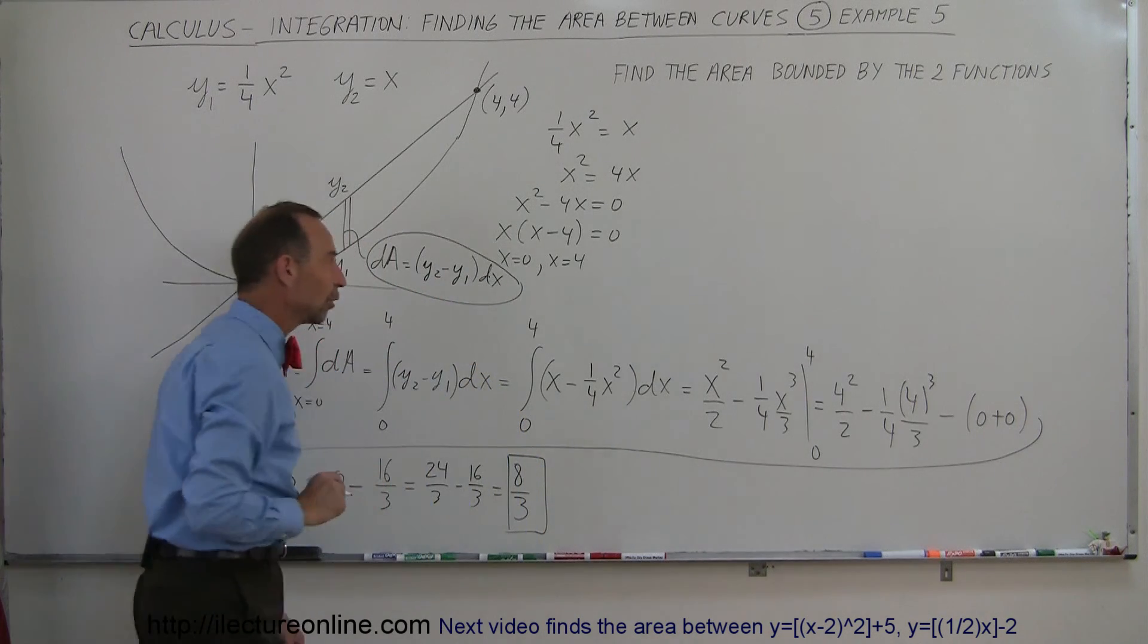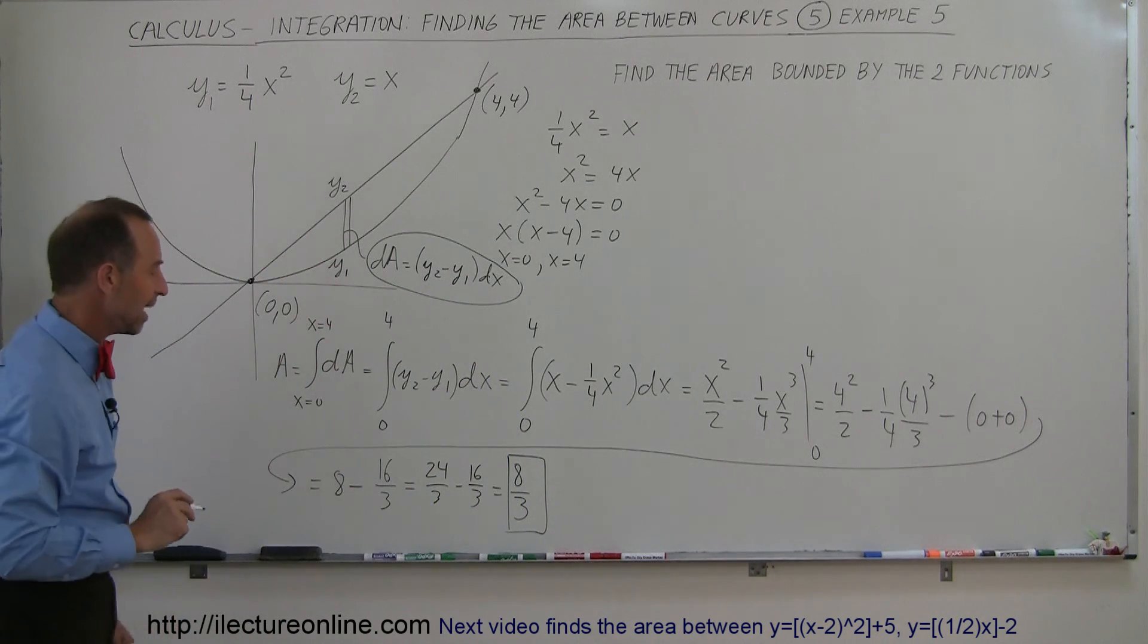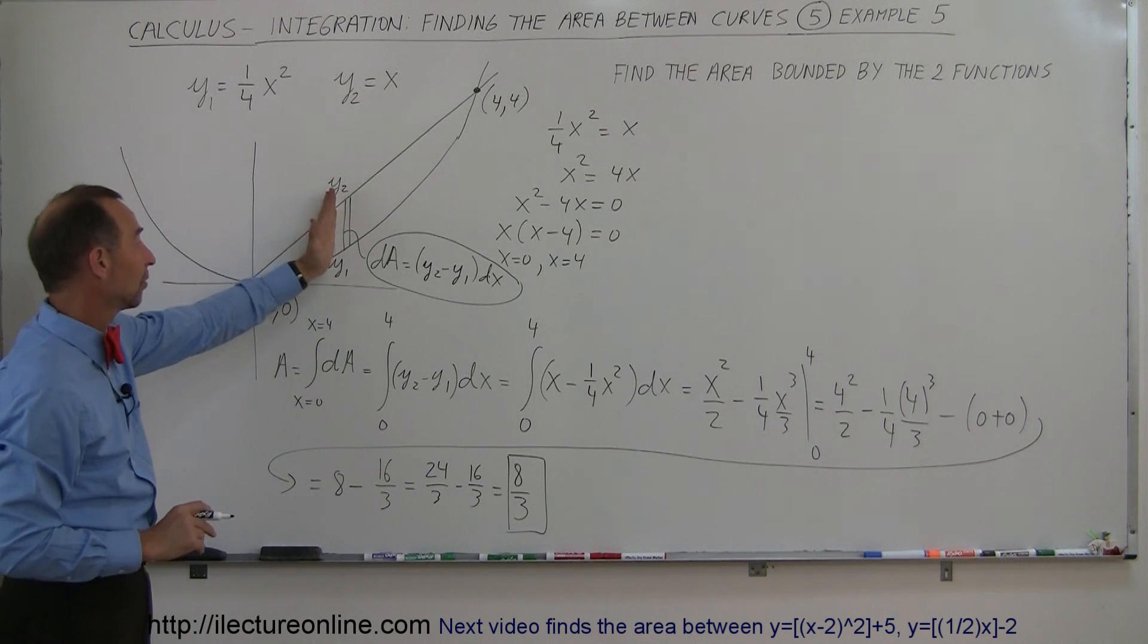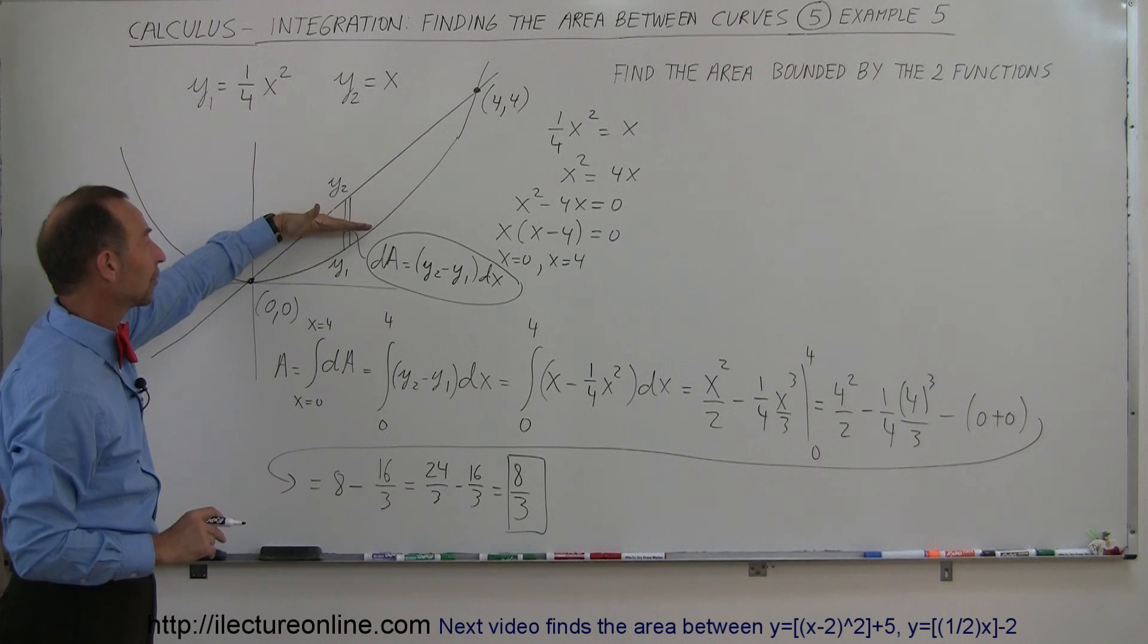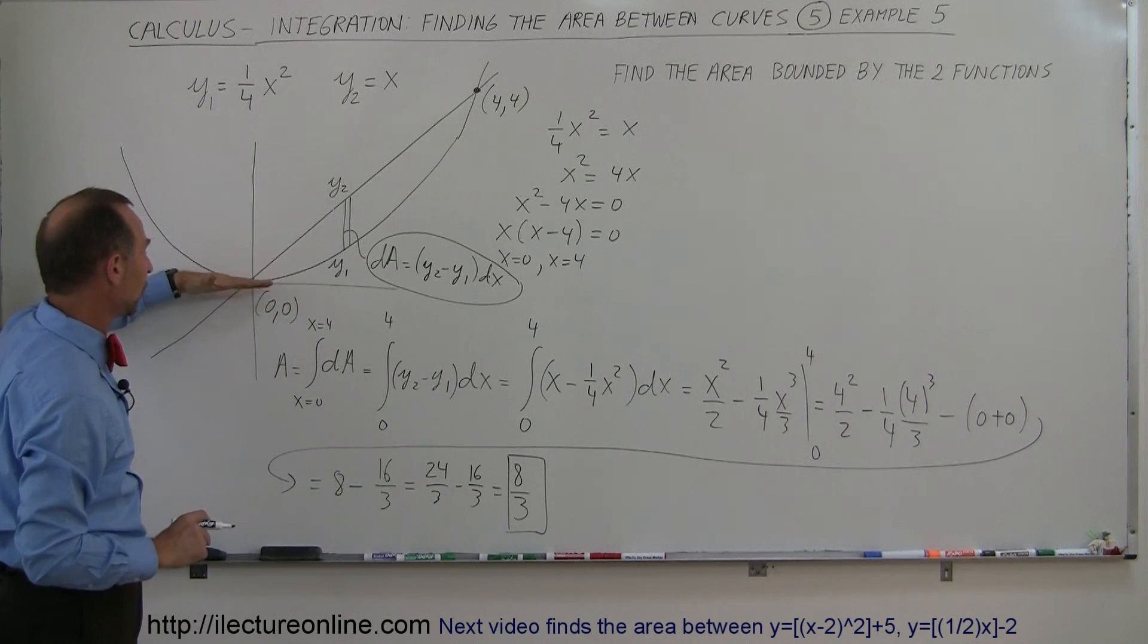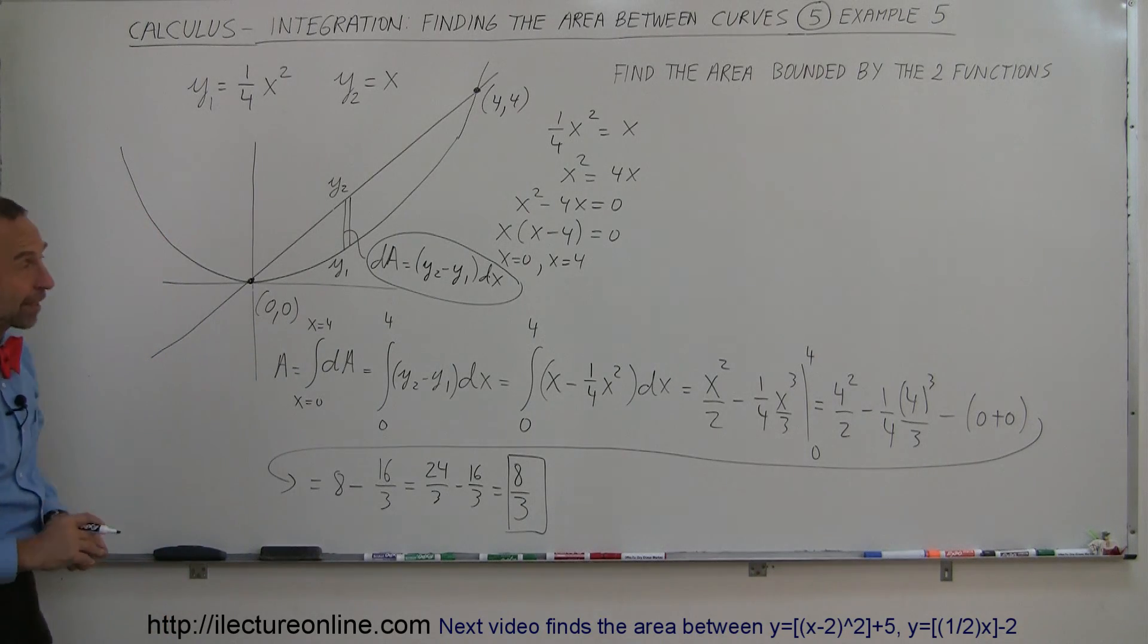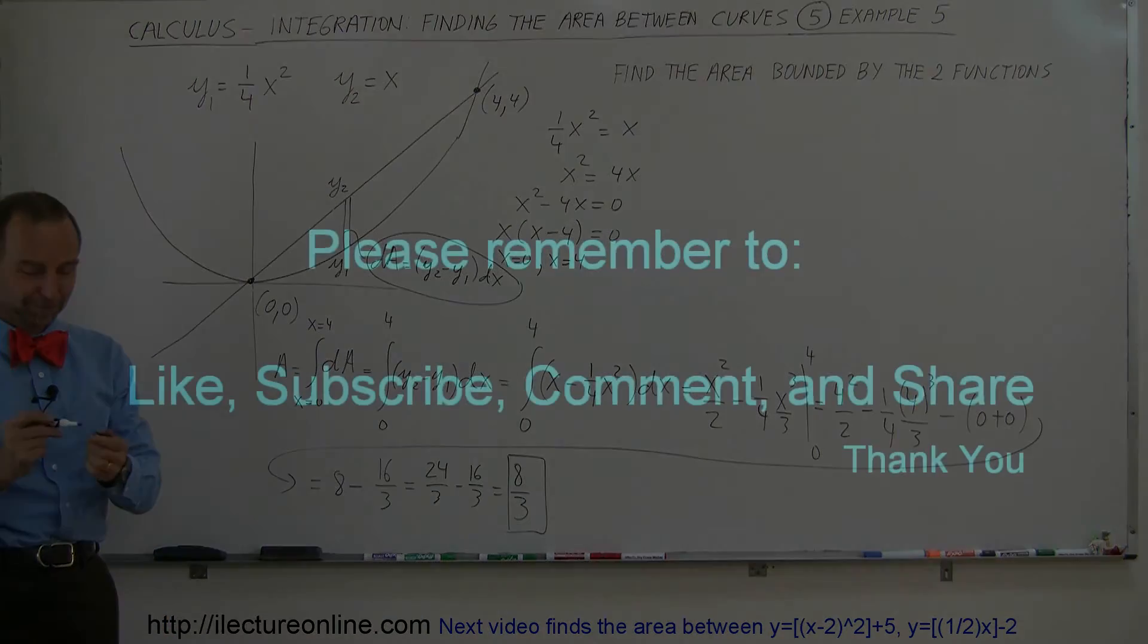And there's the area between those two equations, 8 over 3. So that was very straightforward, and again, you could do it with an area element set up horizontally. Of course, when you do that, your limits are going to go from y equals 0 to y equals 4, but you should get the same result either way, and that's how we do that. Thank you.